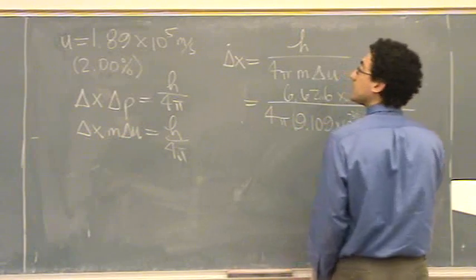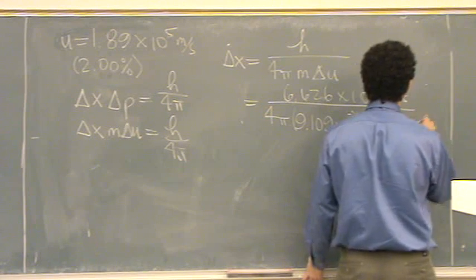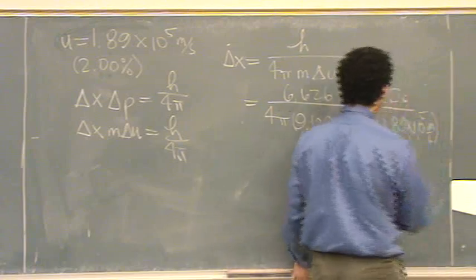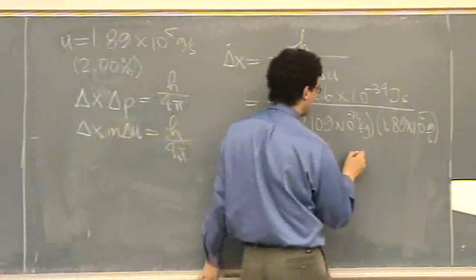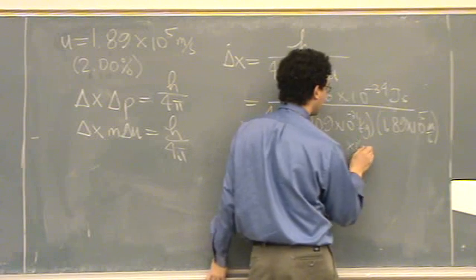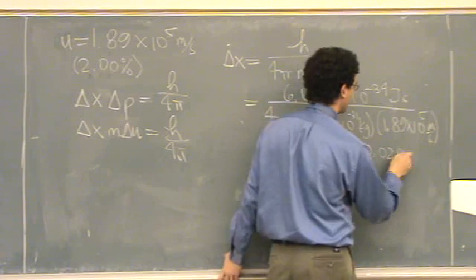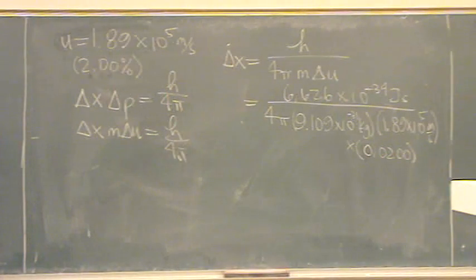And then change in U, that's 1.89 times 10 to the 5 meters per second. That was given in the problem. And I also have to multiply by 2%. So, I'll just do it again times 0.02.